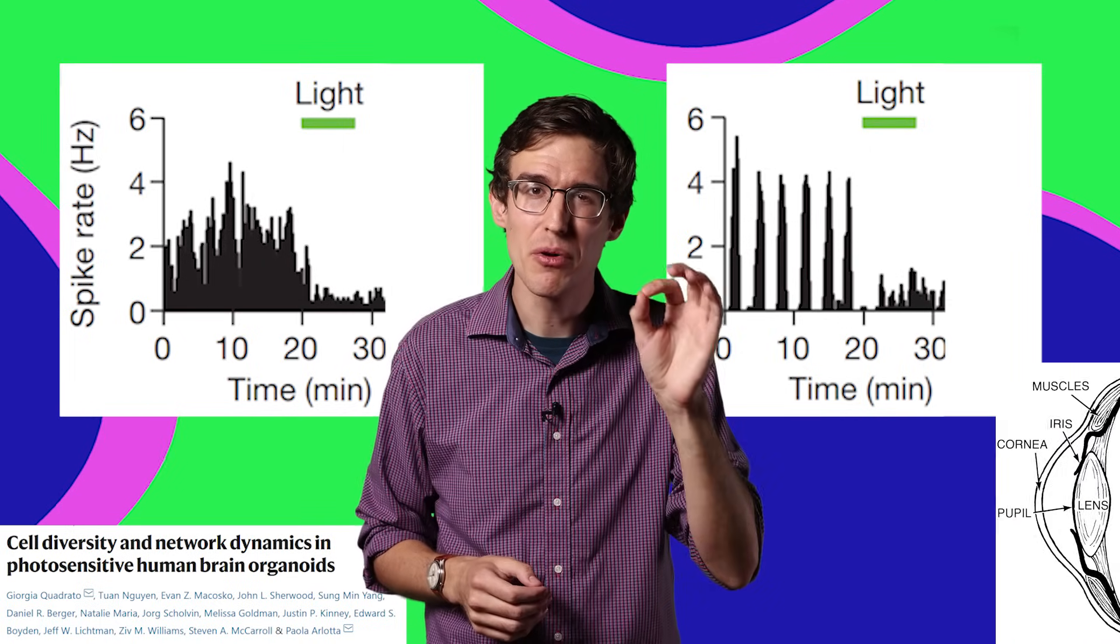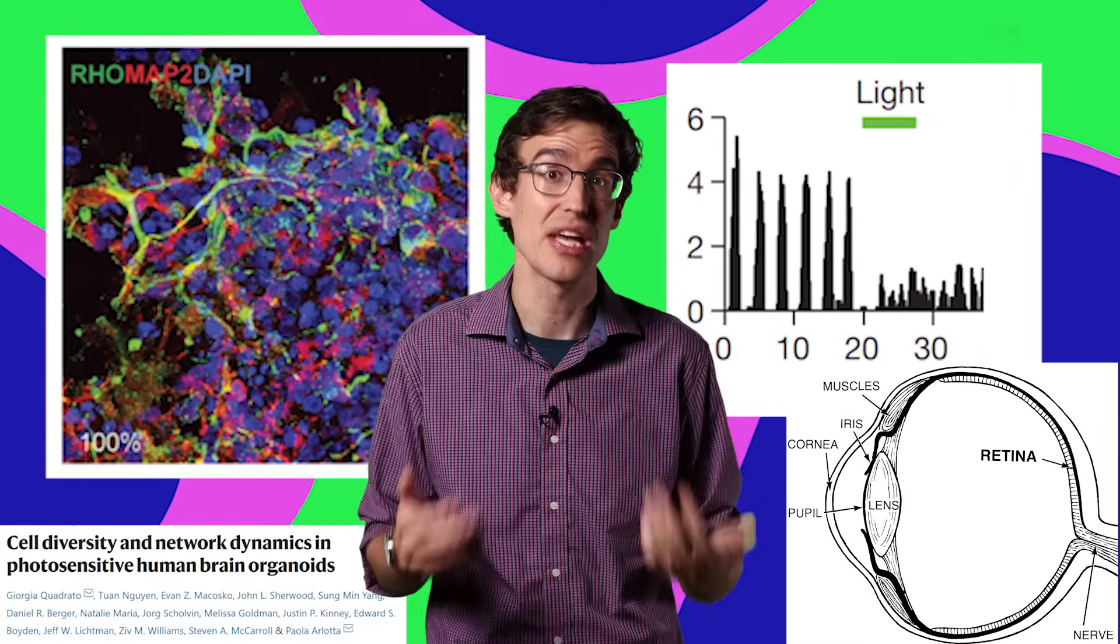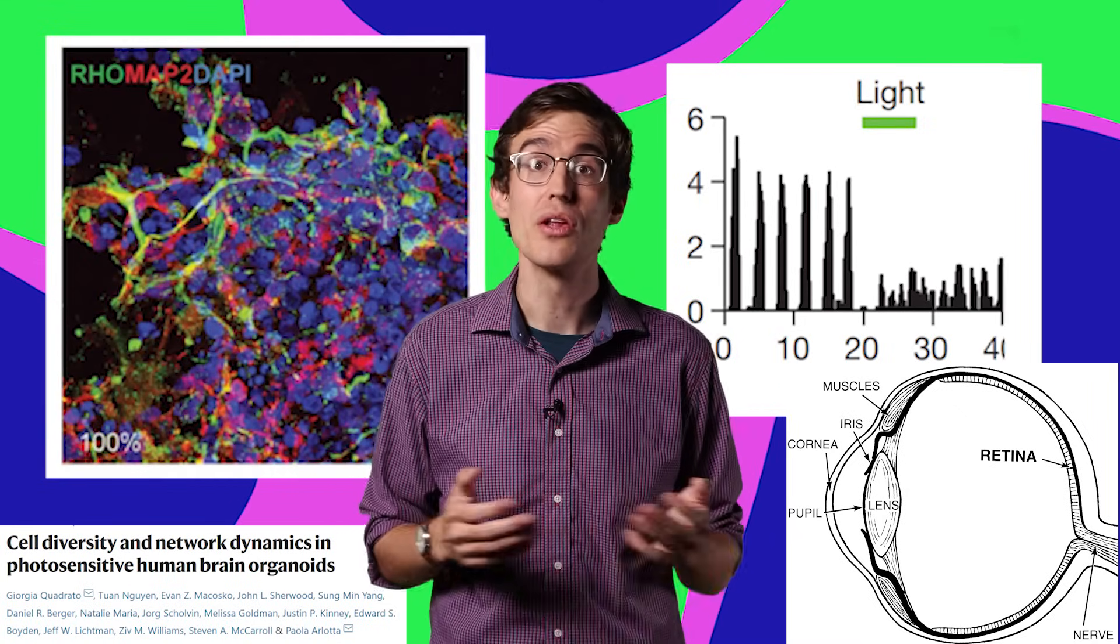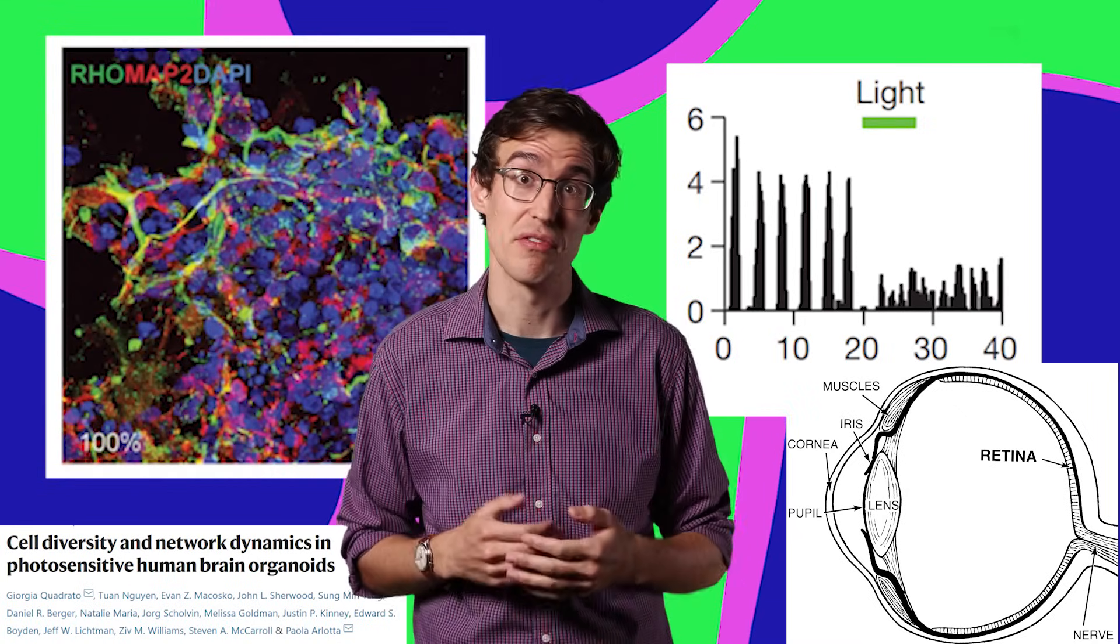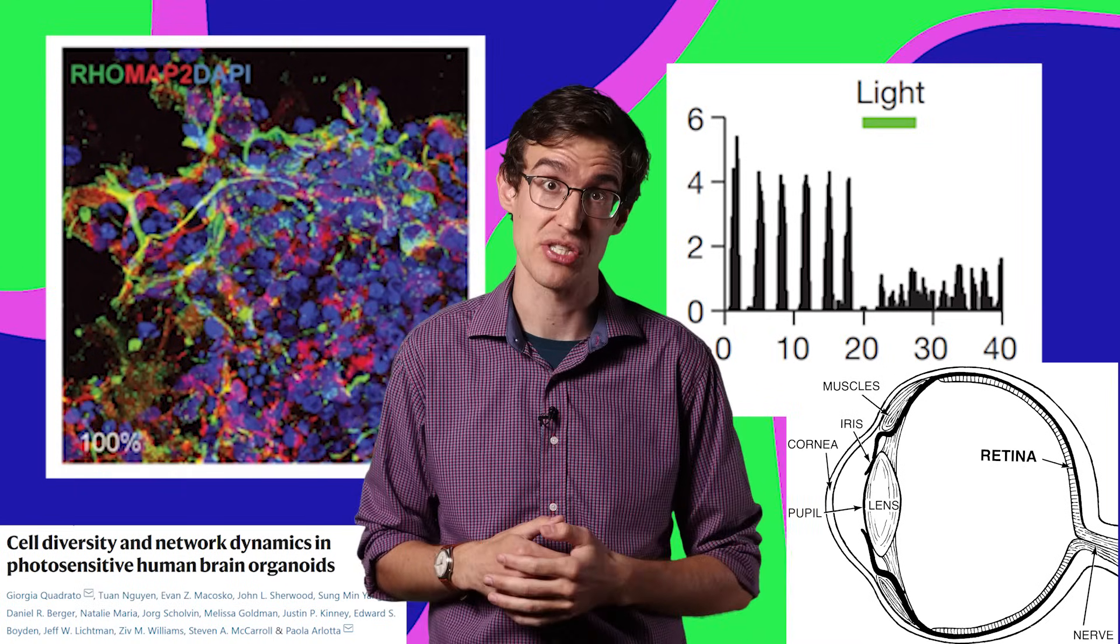Your retina is a little bit of your brain peeking out, so the recipe for mini-brains also makes these cells that respond to light. One study found that after six months of development, 65% of their organoids had grown photoreceptors.